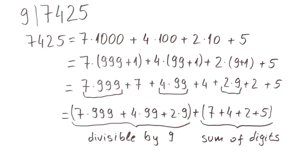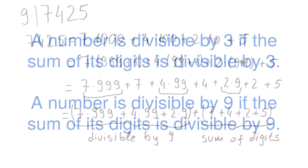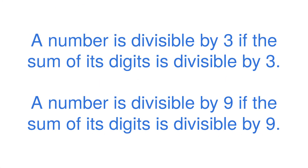In a similar way, we would show divisibility by 3. Now we can say that a number is divisible by 3 if the sum of its digits is divisible by 3, and a number is divisible by 9 if the sum of its digits is divisible by 9.